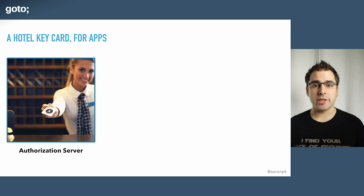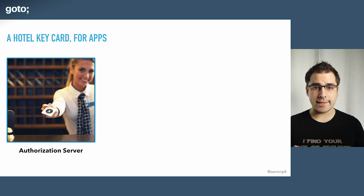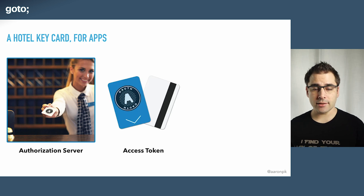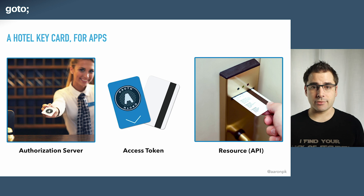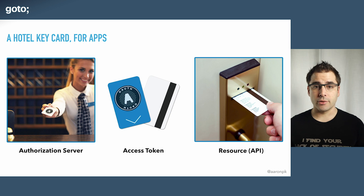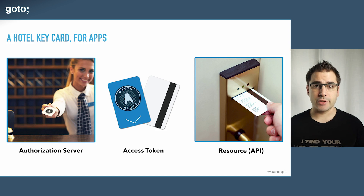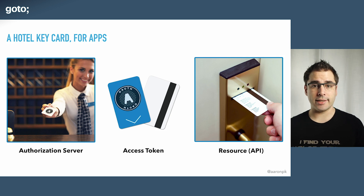I like to use this analogy of checking in at a hotel. You go to the front desk, you give that person your ID and your credit card, they give you back a hotel key. You take that hotel key and you swipe it on the door and the door lets you in. The key card doesn't actually need to represent you as a person — it just needs to represent that you have access to this door. The door doesn't even care about who you are; it just cares about whether this key card has access. So in OAuth terms, the person at the front desk is the authorization server, the key card is the access token, and the door is the API.